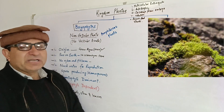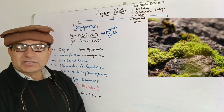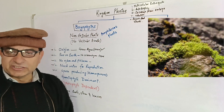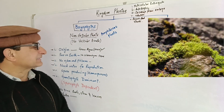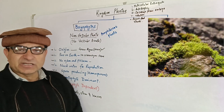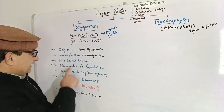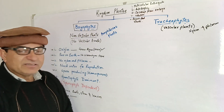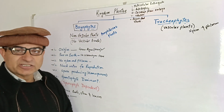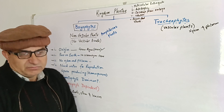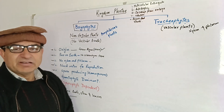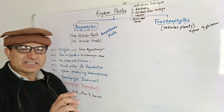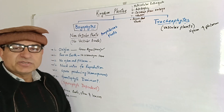Bryophytes don't support their upright posture because sclerenchyma tissues are absent. If they don't have xylem, then obviously they don't have transportation of water and minerals or translocation of food. This facility is not available, therefore they are smaller in size and rely on diffusion or osmosis to provide materials to their metabolically active parts.